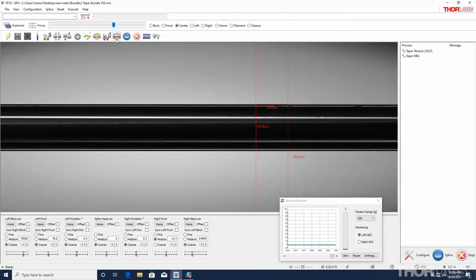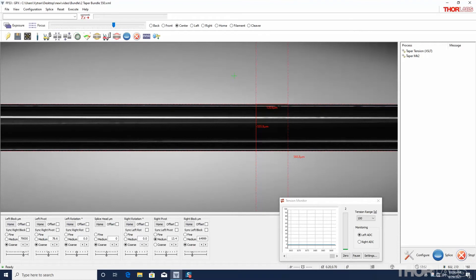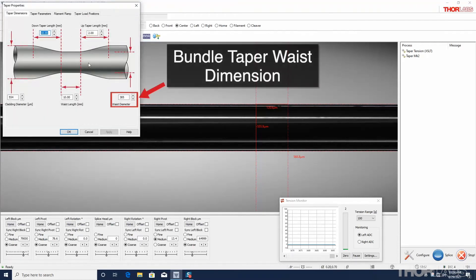For this bundle taper, the starting diameter is the outer diameter of the pre-taper waist. In this demonstration, that is 550 microns, or a more accurate value can be measured using the measurement guides. The waist of this taper is determined by the application for which the fiber bundle will be used. For instance, whether the bundle needs to be spliced to another fiber to form a power combiner, or mounted in a ferrule for an illumination application.